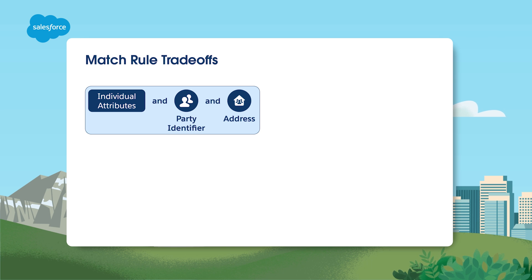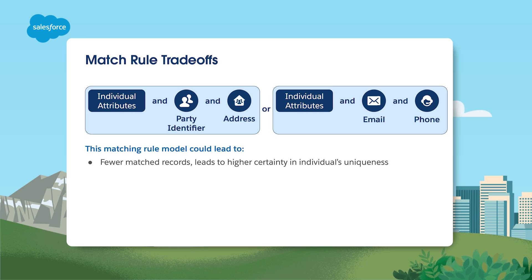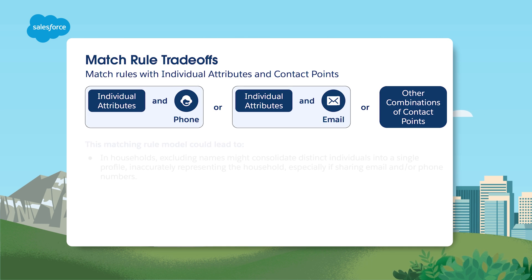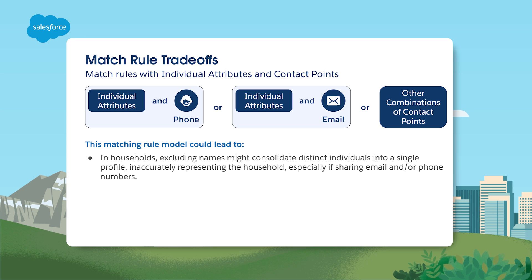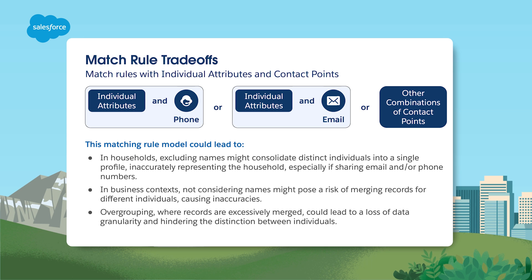This matching model with individual attributes, contact points, and party identifiers can result in fewer matches. However, it leads to higher certainty in individual uniqueness, protects individual privacy, and minimizes risks of data overlap. Excluding names in households may merge distinct individuals, inaccurately reflecting the household. In business settings, disregarding names may merge records for different individuals, leading to inaccuracies — what we call over-grouping — which can cause a loss of data granularity, hindering individual distinction.